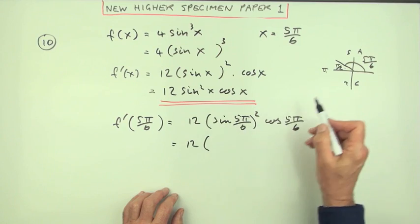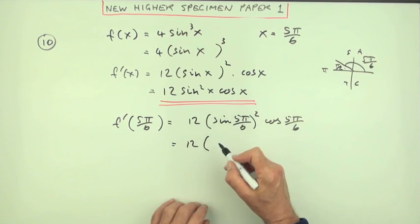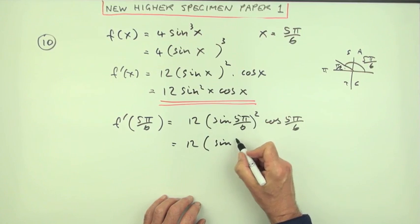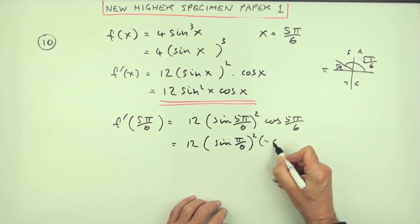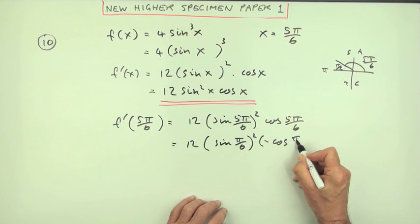That will be, well the sine's positive here so that can just stay as the sine of π/6. But the cosine's negative so it'll be the negative of the cosine of π/6.